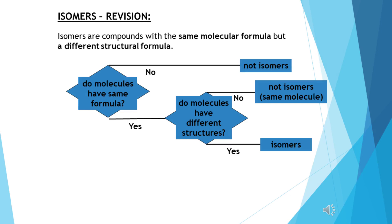Homologous series can have isomers within themselves or between different families. To discover if you have isomers, ask yourself two questions. Firstly, do they have the same molecular formula? If the answer is no, they are not isomers. If yes, ask yourself a second question: do the molecules have different structures? If the answer is no, they are not isomers. Be careful — sometimes structures are made to look different but they're really not. If they genuinely are different, they will have a different name and therefore they are isomers.